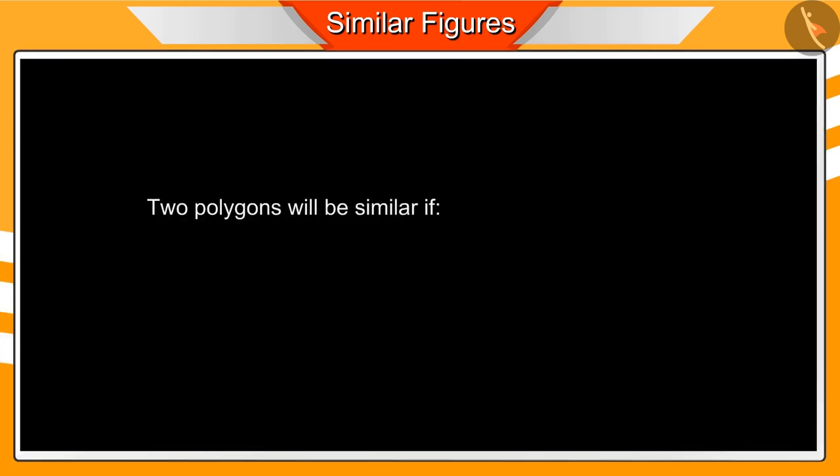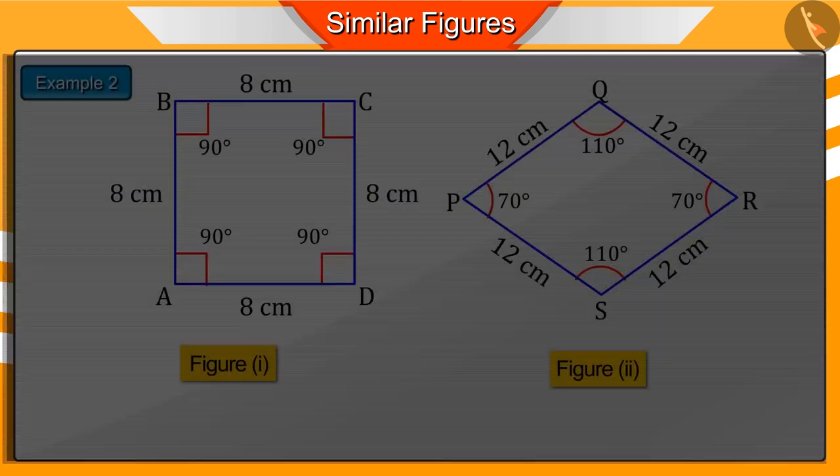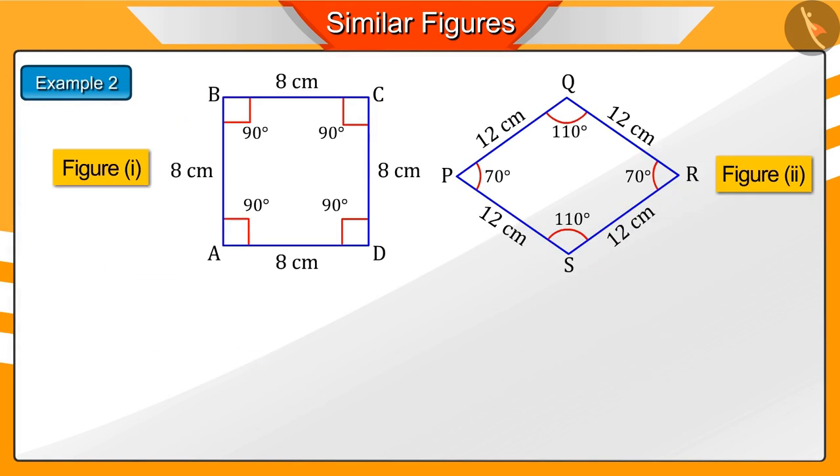To know if any two figures are similar, we check the ratio of their corresponding sides and the corresponding angles. Ratio of the length of the corresponding sides of the two similar figures will be as follows.